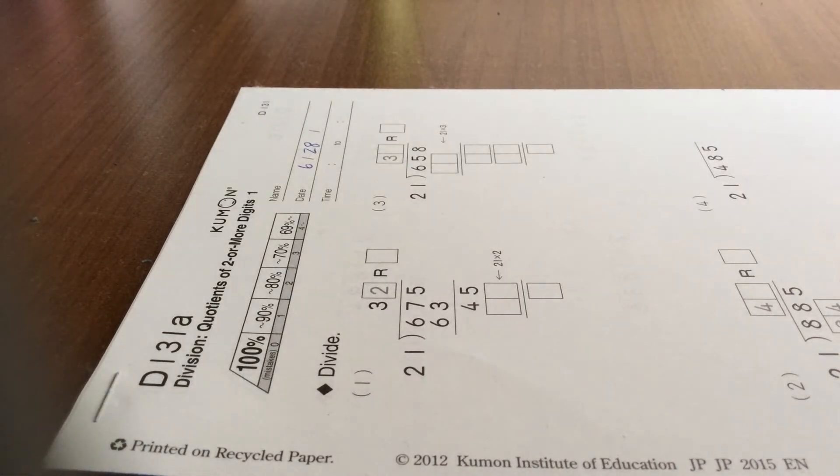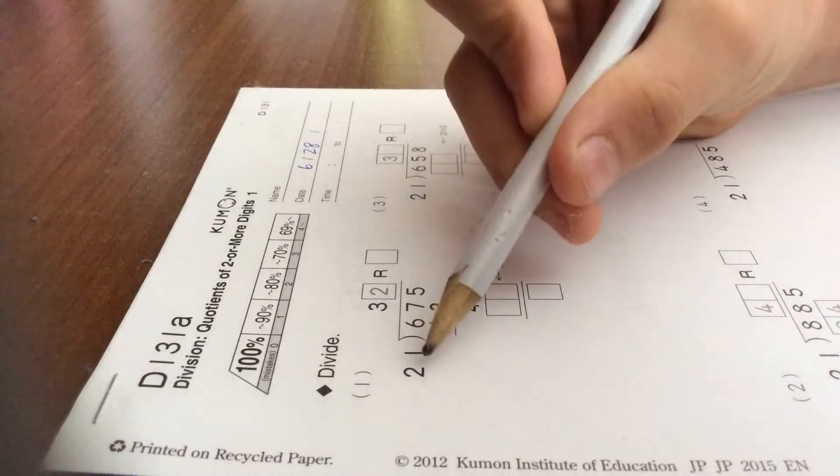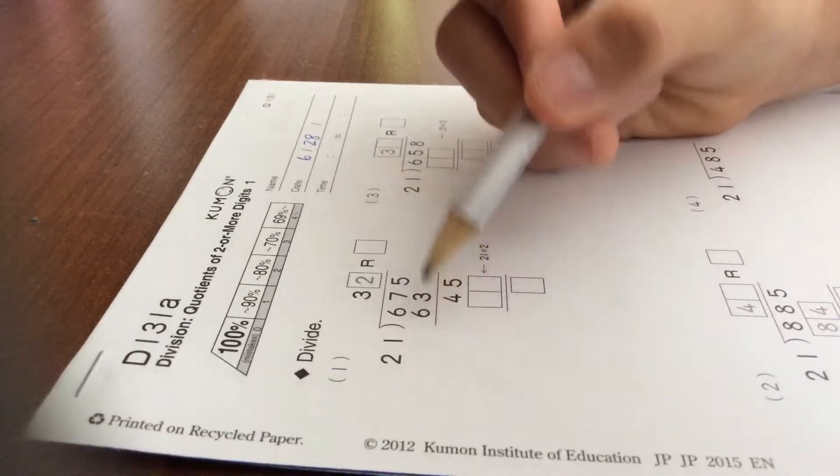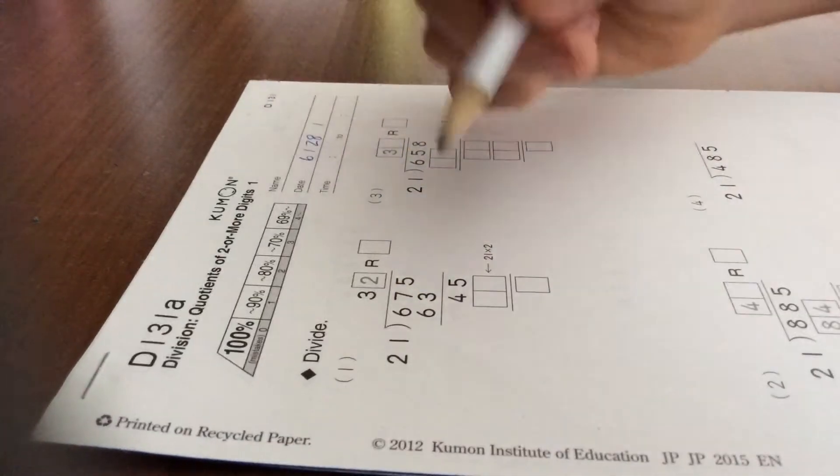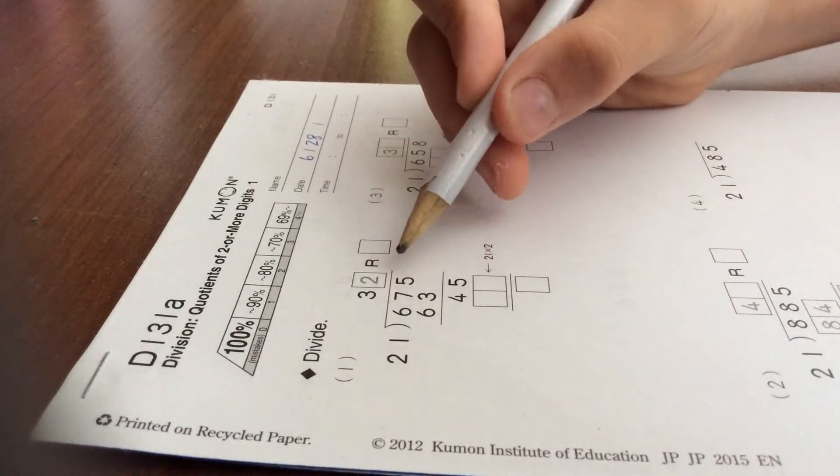Hi guys, today we'll be learning quotients of two or more digits. Now first you gotta write 21, and you must put this sign and the line on top of it, and now you must write 675.